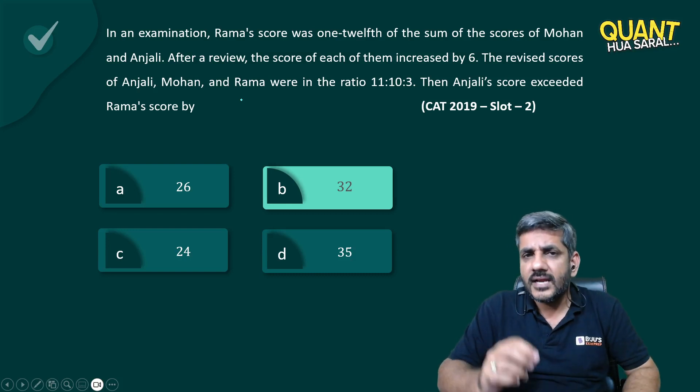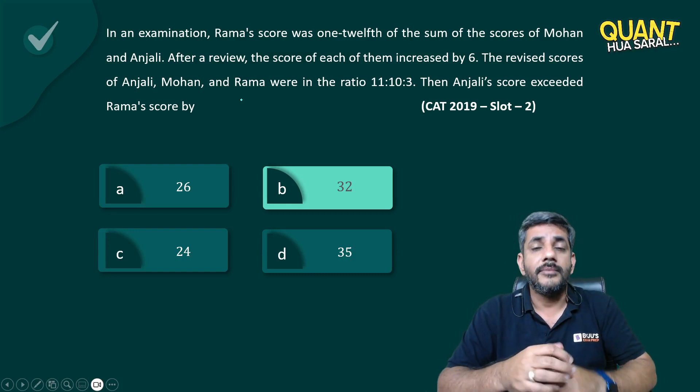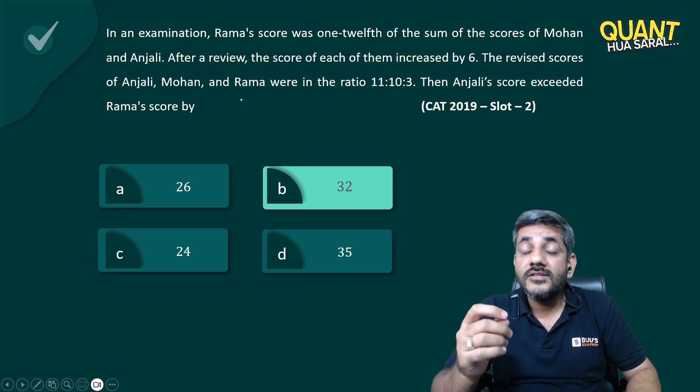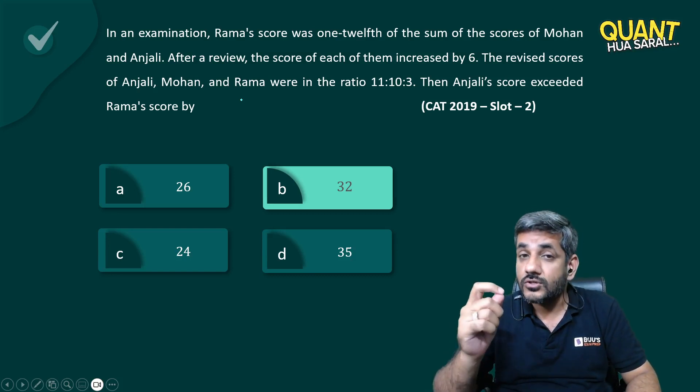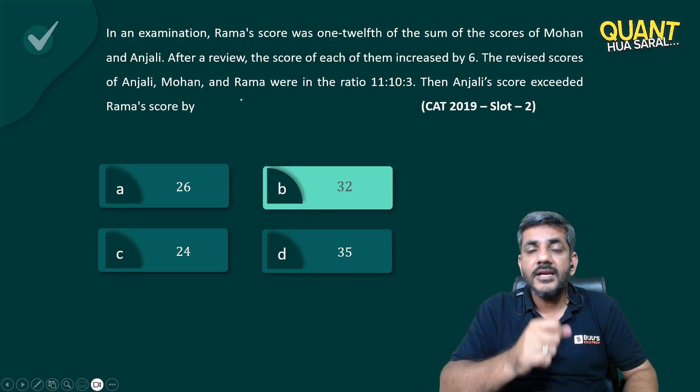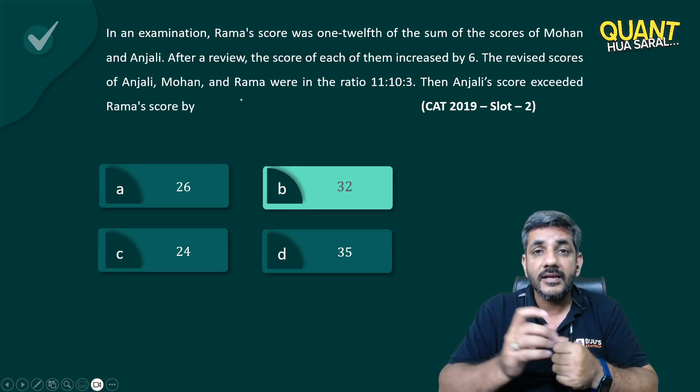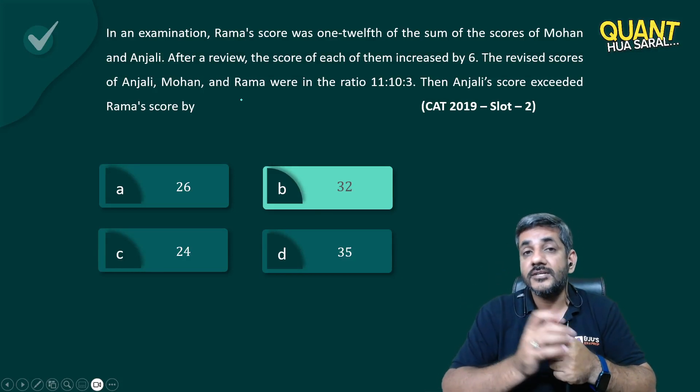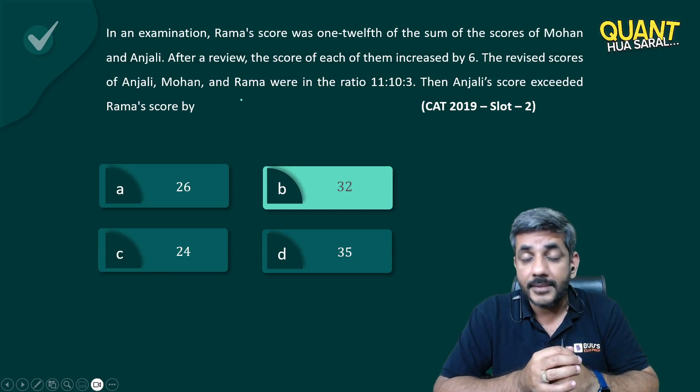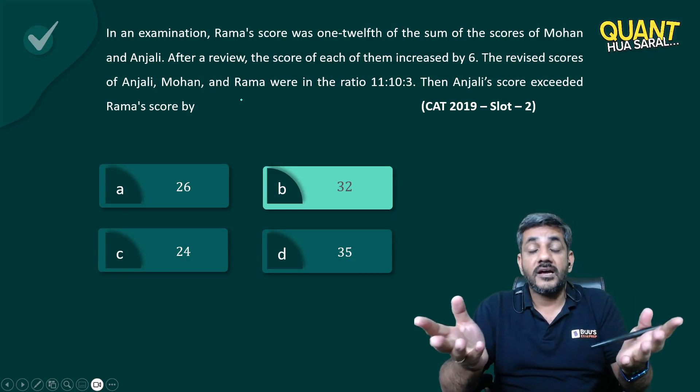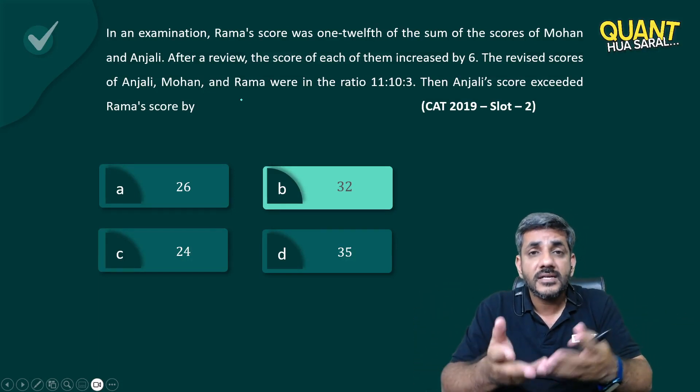Now in these questions, there is one more thing that I actually did not talk about in the middle. That was: what if the scores are in fractions? It is not necessary if three numbers are in a ratio of 11:10:3, then 11 and 3 differ by 8, so their difference should always be a multiple of 8. What if they are in fractions? Eight cancels out by something and the difference might be 5.